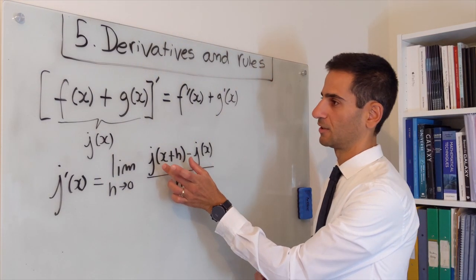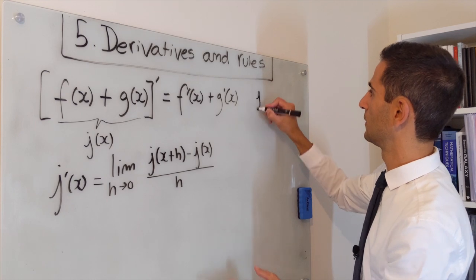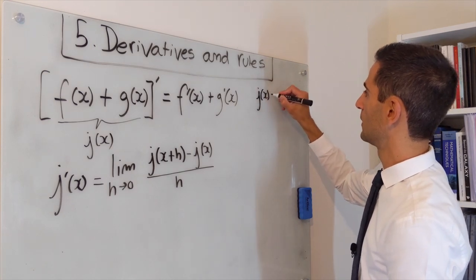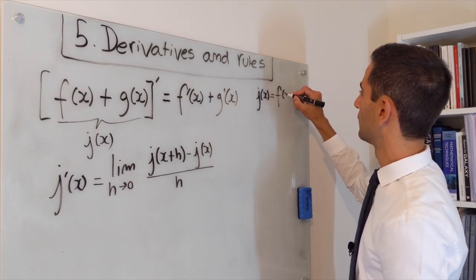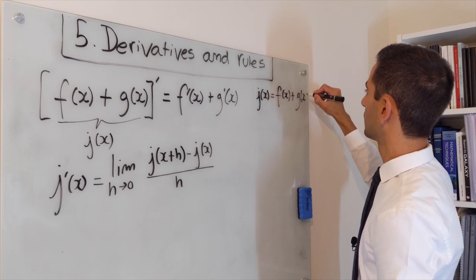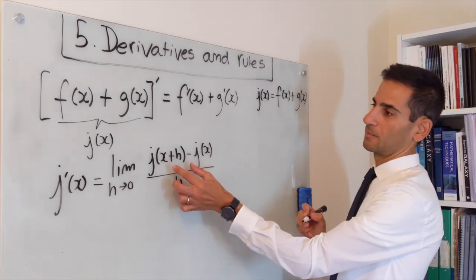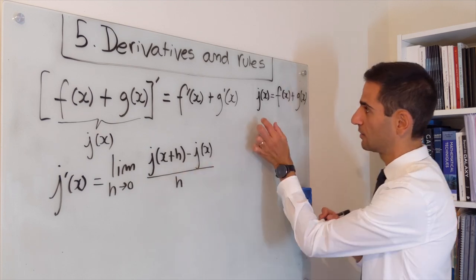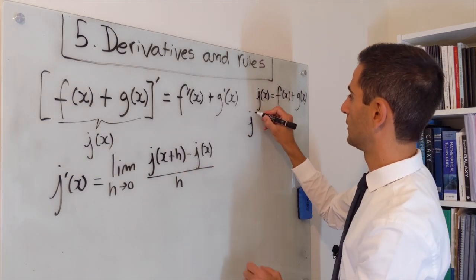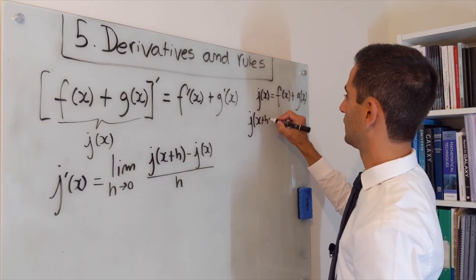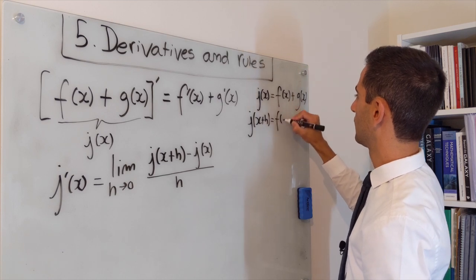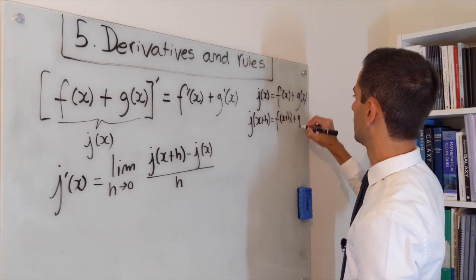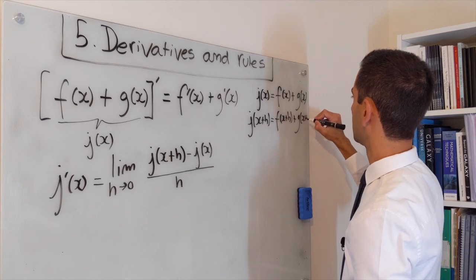If we look at the definition of j of x, j of x is given by f of x plus g of x. It means that if we plug in x plus h into j of x, we get f of x plus h plus g of x plus h.